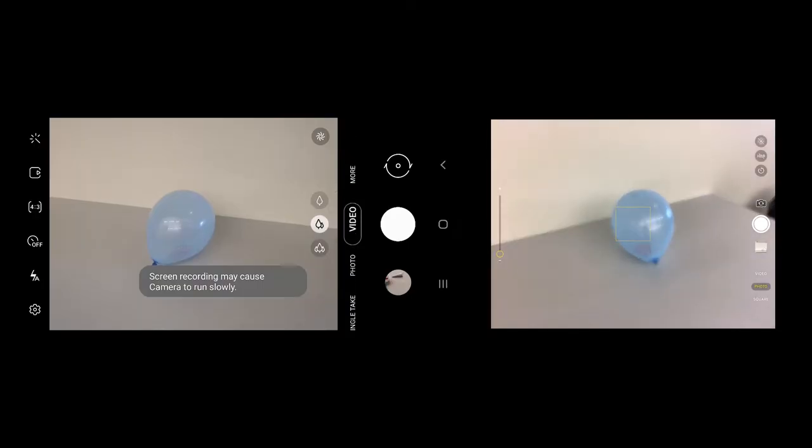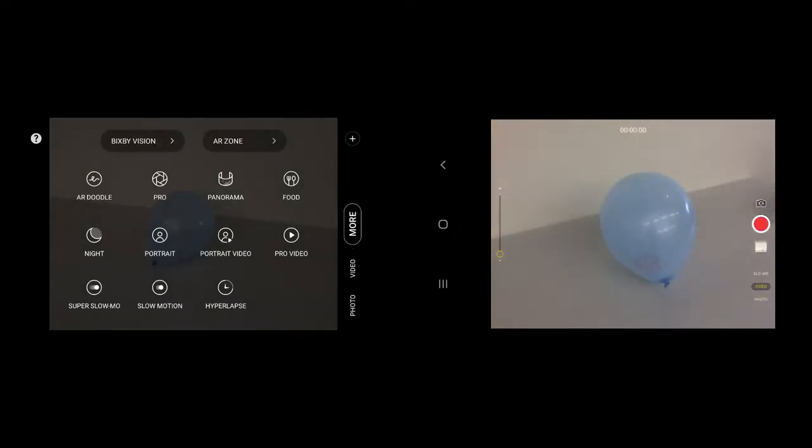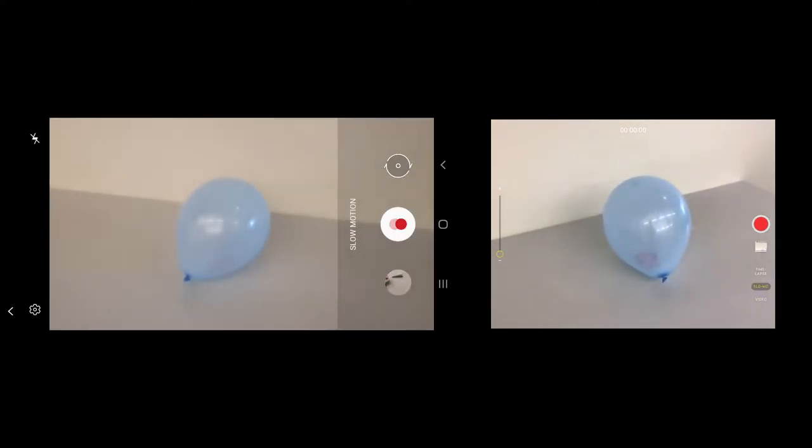Okay, let's get into taking the film. On your device, you'll need to find the slow motion camera option, and when you've found it, hit record and pop your balloon.